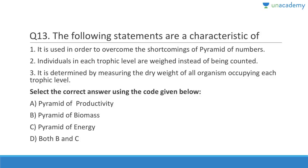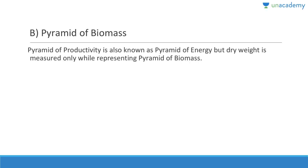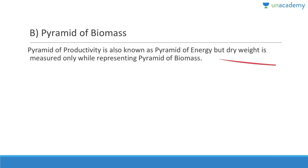Question 13: This is used to overcome the shortcomings of the pyramid of numbers; individuals in each trophic level are weighed instead of being counted. Since they are talking about weight, the answer has to be pyramid of biomass. It is determined by measuring the dry weight of all organisms occupying each trophic level. Pyramid of productivity is also known as pyramid of energy, but dry weight is measured only while representing pyramid of biomass.